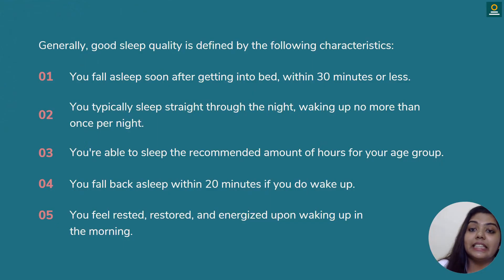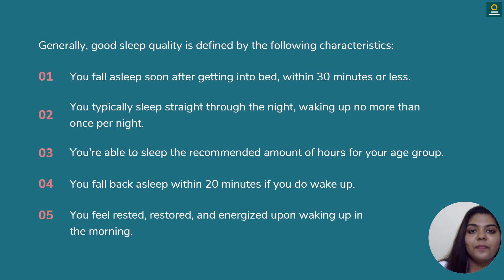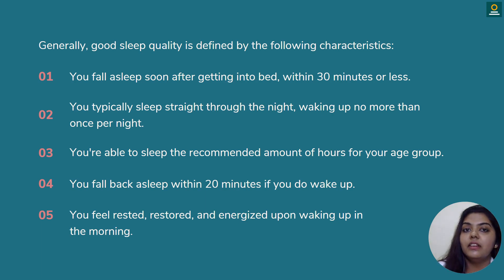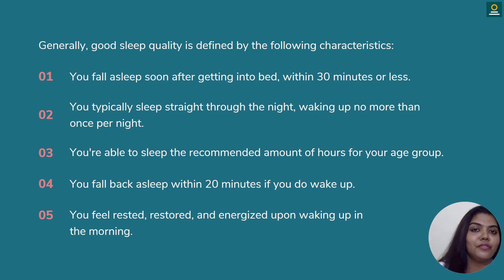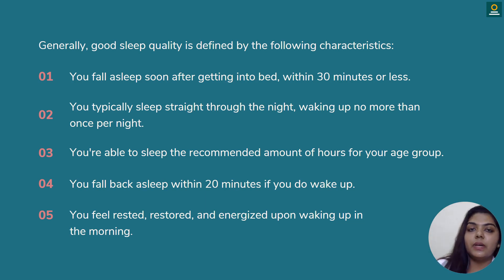There are characteristics which help us understand whether we are having good quality sleep. The first is that you fall asleep soon after getting into bed, within 30 minutes or less. Apart from using your phone or doing other activities in bed which can affect sleep, if you are able to sleep within 30 minutes of going to bed, that indicates good quality sleep.